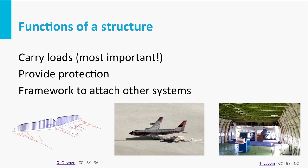The last picture shows the third function: the capacity of the aircraft structure to provide attachment points for many other systems. In the case of aircraft, these are hydraulic and electrical systems, isolation blankets, etc.